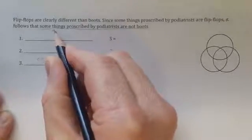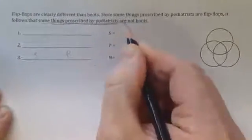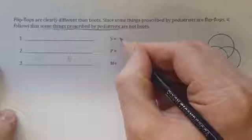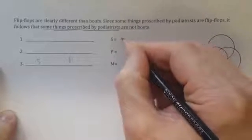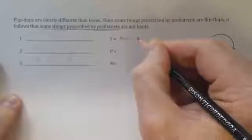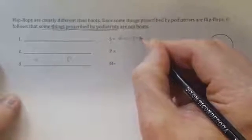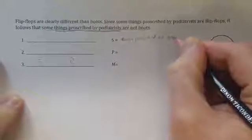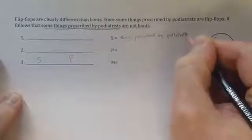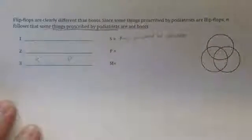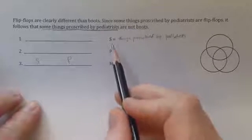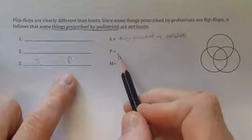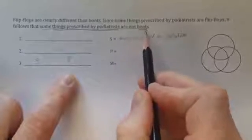So here, the subject of the conclusion is things prescribed by podiatrists. So I'm going to write that as the definition of that term variable. Now that I've defined the subject term of the conclusion, I'm going to define the predicate term of the conclusion, and that is simply boots.